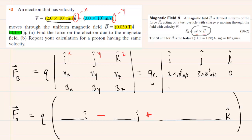Now for the magnetic field components: it has an x component of 0.03 tesla. Be careful — the y component is negative 0.15 tesla. There is no z component for the magnetic field, so we'll put a zero there for the k hat direction. We'll close off this notation for the cross product and begin to compute it.